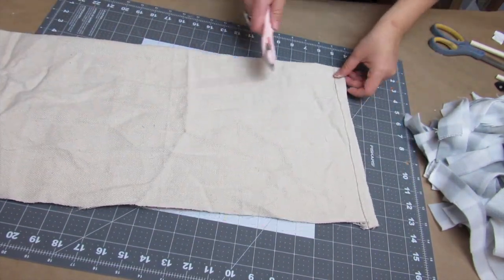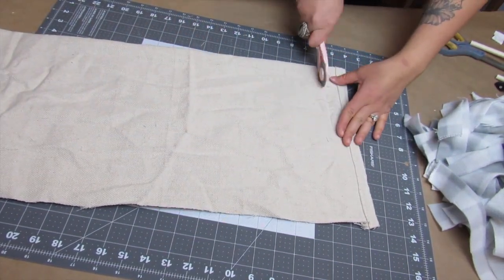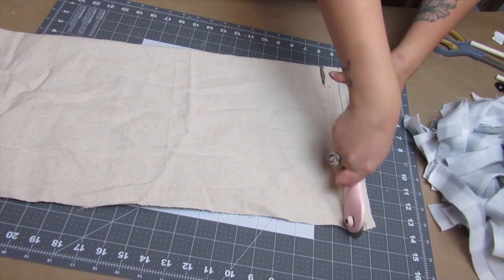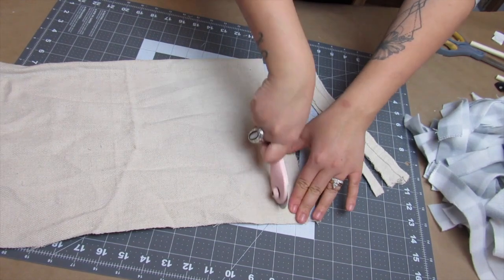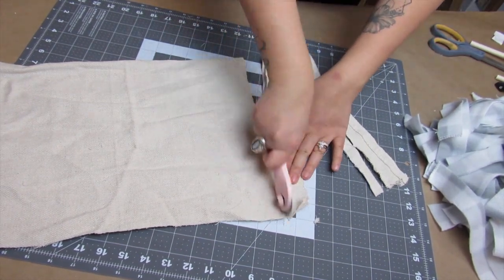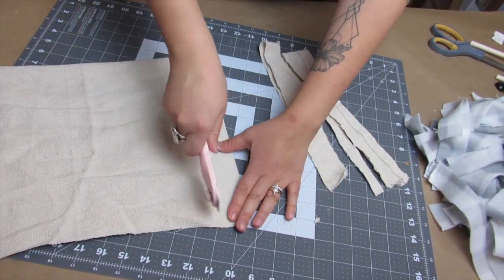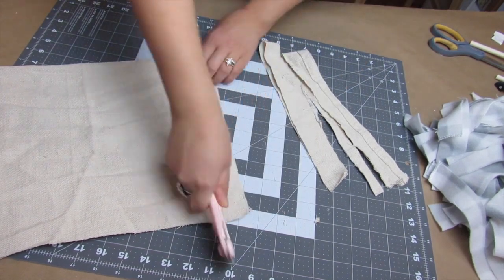I'm just going to do the same thing for the drop cloth. Now this did not cut as easily with the rotary blade just because it's a little more thick of a material, but I just pressed down and then it was fine. I did not use as much of the drop cloth as I did the buffalo check blanket, but that's just personal preference.